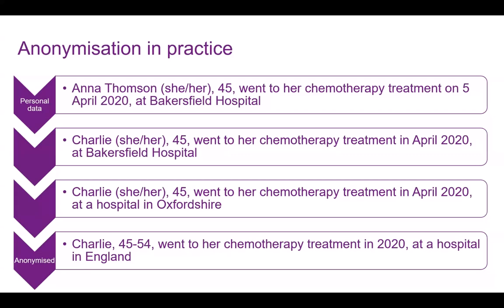Here's an example of where you might need to take additional factors into account when anonymizing data. Starting with personal data, you can just take out the direct identifier — here I've just taken out the name. However, further contextual information might make you decide to change other information. For example, the mention of Bakersfield Hospital — it's unusual to receive chemotherapy treatment there as most are sent to Churchill Hospital — so you might decide that Bakersfield Hospital needs to be changed, or that it's an indirect identifier especially given that there's a date for the treatment too.